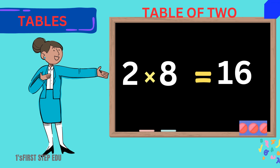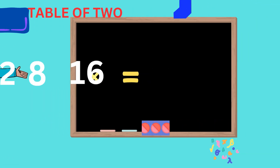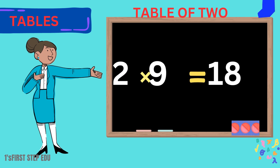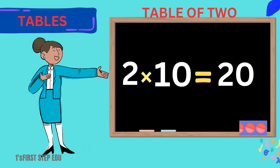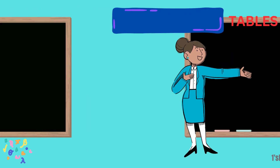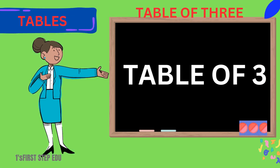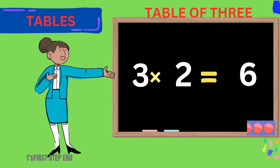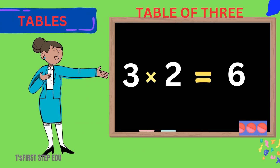2 sevens are 14. 2 sevens are 14. 2 eights are 16. 2 eights are 16. 2 nines are 18. 2 nines are 18. 2 tens are 20. 2 tens are 20. Table of 3.